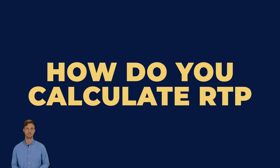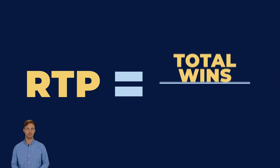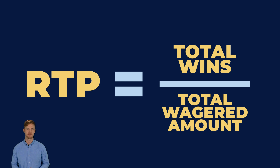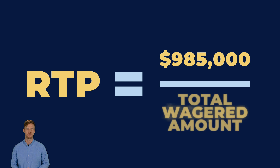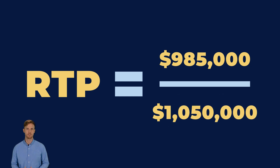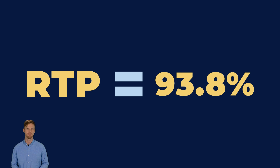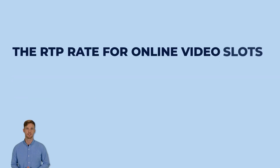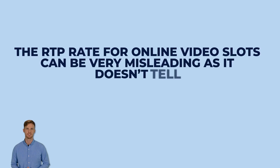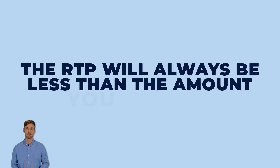RTP is calculated by dividing the total wins by the total wagered amount. For instance, if a game has generated $985,000 in wins from a $1,050,000 turnover, the RTP would be 93.8%. However, the RTP rate for online video slots can be very misleading, as it doesn't tell how often players can expect to win. In the long run, the RTP will always be less than the amount you wagered.